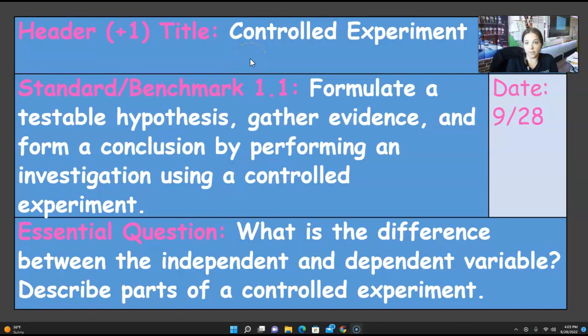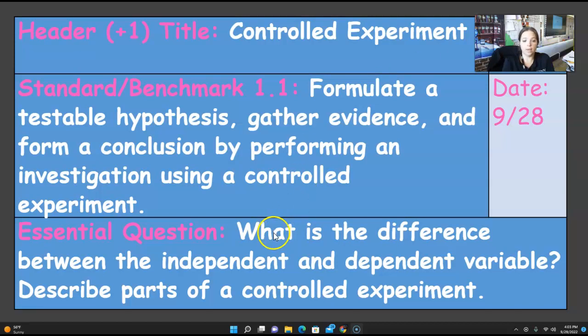Okay, so this is the last set of notes. It is controlled experiment. This is going to be page 8, the last set of notes that we have. Make sure to match up with the essential question, which is what is the difference between independent and dependent variable, along with describe the parts of a controlled experiment.